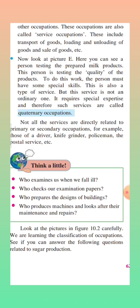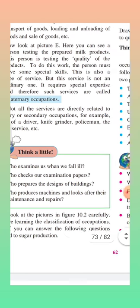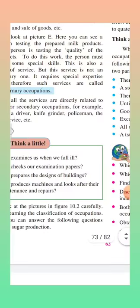Think a little: who examines us when we fall ill? A doctor examines us. Who checks our examination papers? A moderator, examiner, or teacher checks our papers. Who prepares the designs of buildings? Architects and engineers prepare the designs. Who produces machines and looks after their maintenance and repairs? Engineers. These are all examples of quaternary occupations.